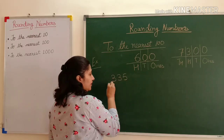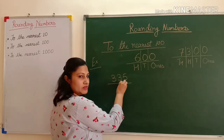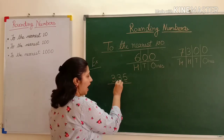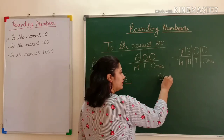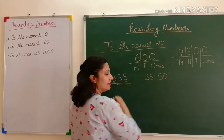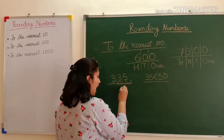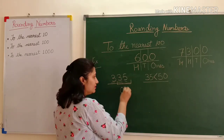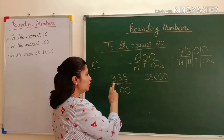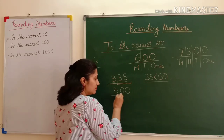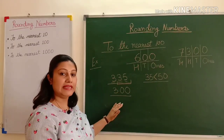Let's take the example 335. The ones digit is 5 and the tens digit is 3. I compare 35 with 50 — 35 is smaller than 50. In this case, I place zero in the ones and tens places but do not add anything to the hundreds place; I write it as it is. When I round off 335 to the nearest hundred, the number is 300.